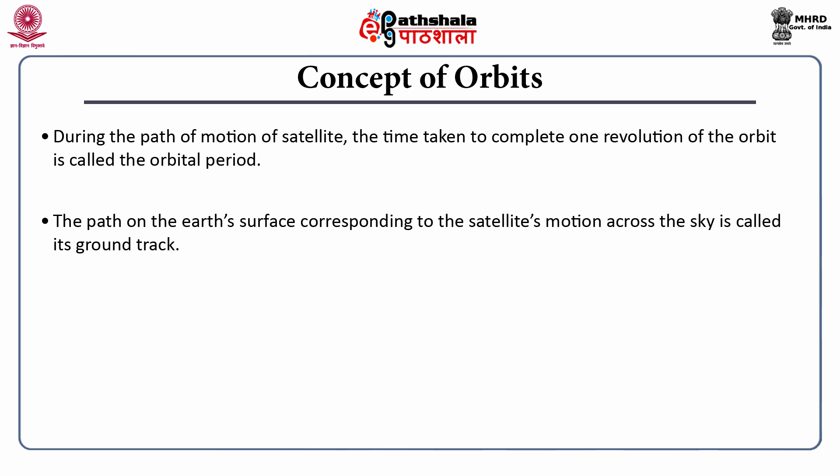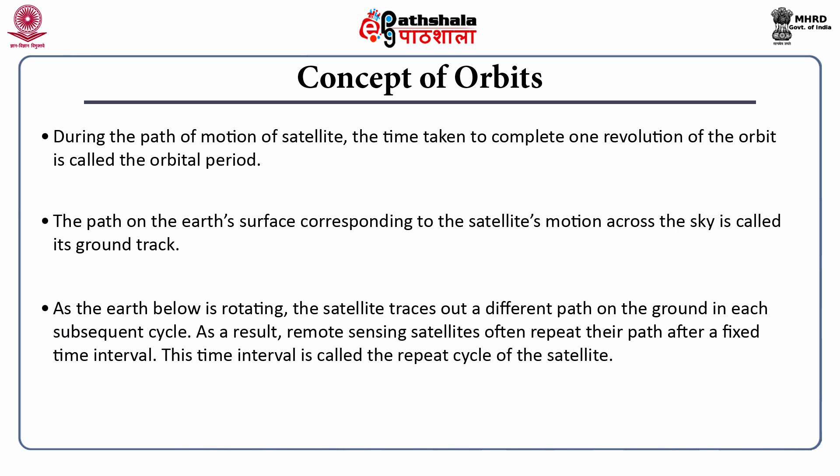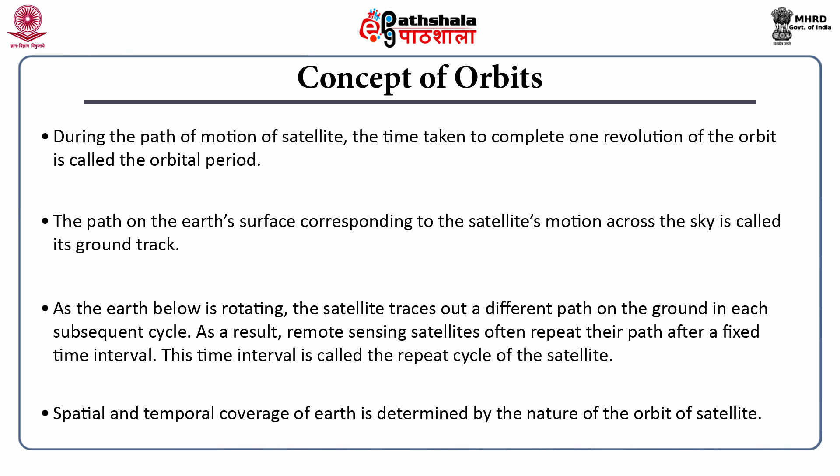The path on the Earth's surface corresponding to the satellite's motion across the sky is called its ground track. As the Earth below is rotating, the satellite traces out a different path on the ground in each subsequent cycle. As a result, remote sensing satellites often repeat their path after a fixed interval, called the repeat cycle of the satellite. The spatial and temporal coverage of the Earth is determined by the nature of the orbit of the satellite.